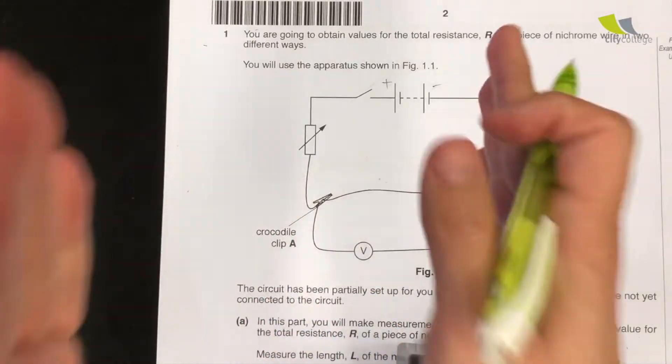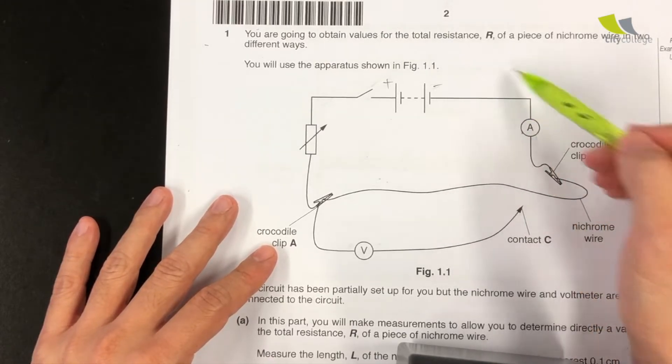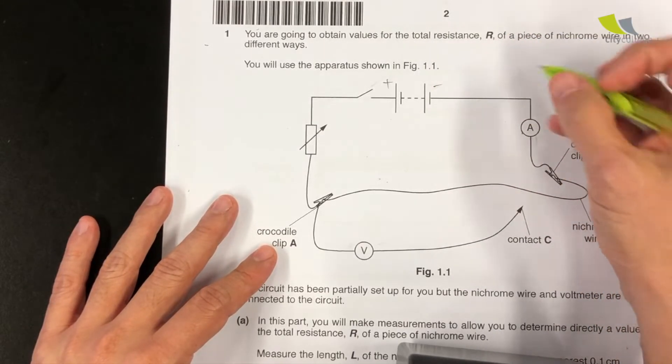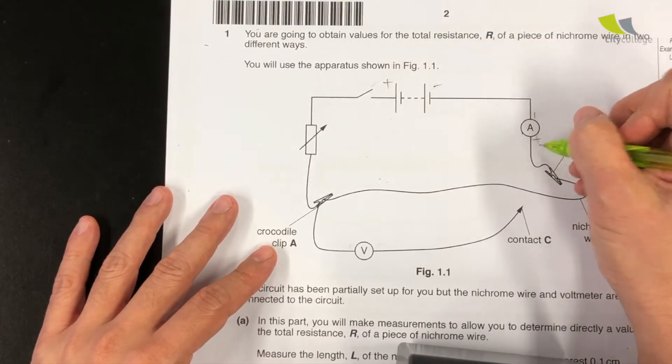So unlike battery, which you go plus, minus, plus, minus, plus, minus, when you connect the ammeter to the cell, it has to be the same sign. So this side is negative, this side of the ammeter is negative, this side is positive.